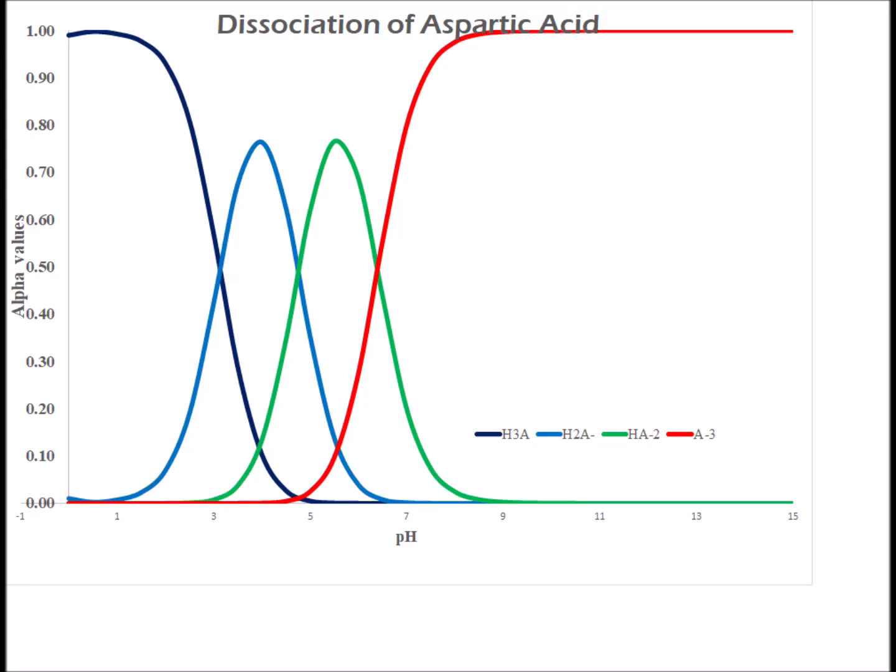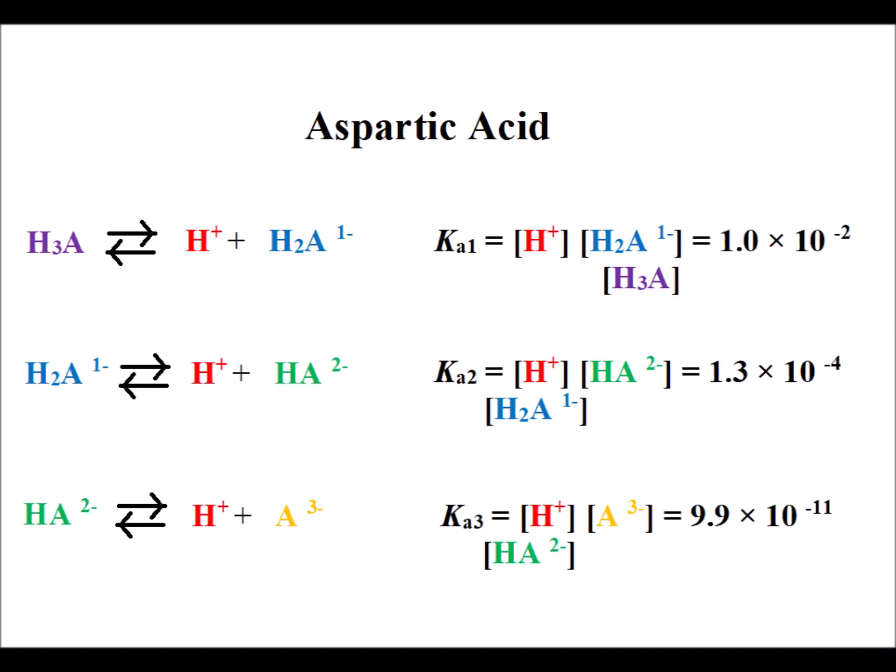Here is a graph of alpha values for the various species of aspartic acid. While it is triprotic, it resembles the graph for citric acid more than phosphoric acid, because the acid dissociation values are not as distinct. The Ka values correspond to three protonation events: one from the side chain carboxyl, one from the alpha carboxyl, and one from the alpha amino group when protonated as ammonium.